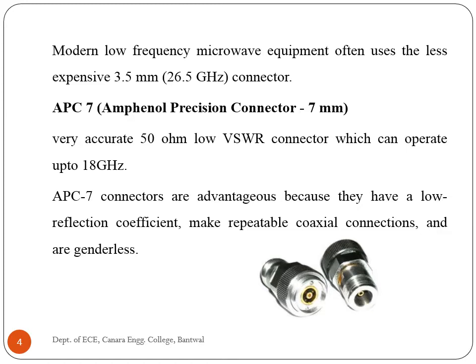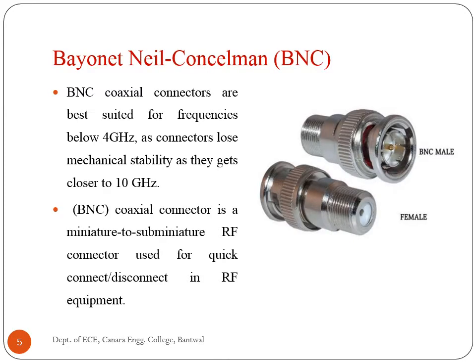Modern low frequency microwave equipment often uses the less expensive 3.5 millimeter connector. APC7 connectors require adapters to change from the connectors used in the laboratory to those used on everyday products. These adapters are expensive precision devices. APC7 is a very accurate 50 ohm, low VSWR connector which can operate up to 18 gigahertz. APC7 connectors are advantageous because they have a low reflection coefficient, make repeatable coaxial connections, and are genderless.